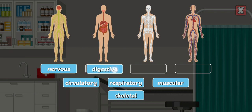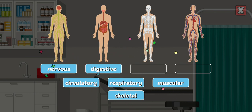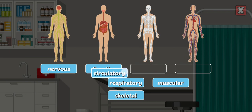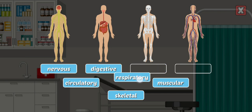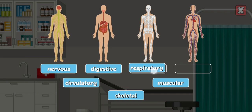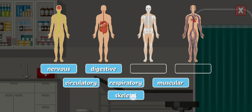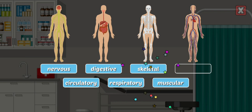Digestive System — the digestive system is a group of organs working together to convert food into energy and nutrients. Circulatory System. Respiratory System. Skeletal System — the skeletal system includes all of the bones and joints in the body.